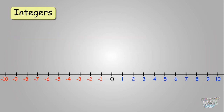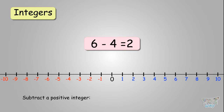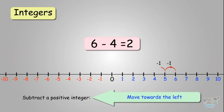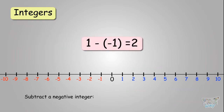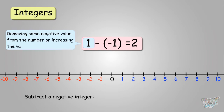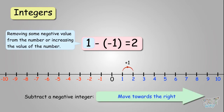If we subtract two positive integers, we move towards the left because we are reducing its value — we are reducing a positive value from a number. But if we have to subtract a negative number from a positive number, we are removing some negative value, so we are increasing the value of the number. We move towards the right.